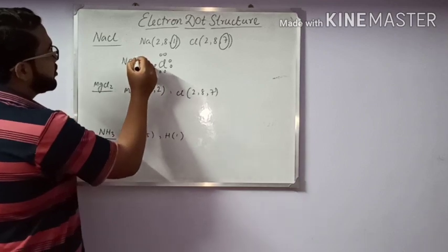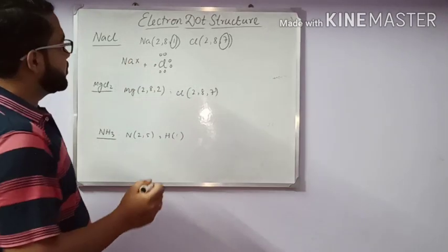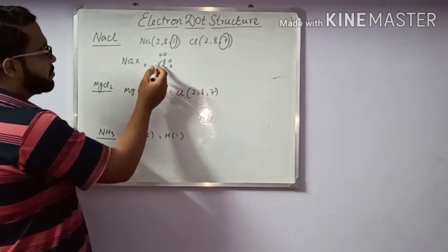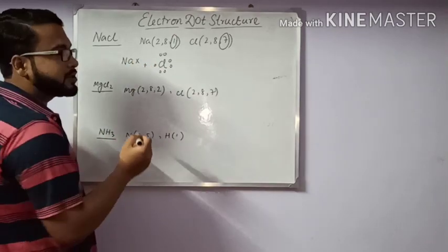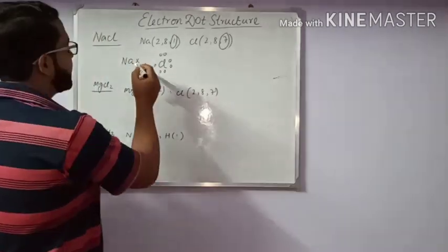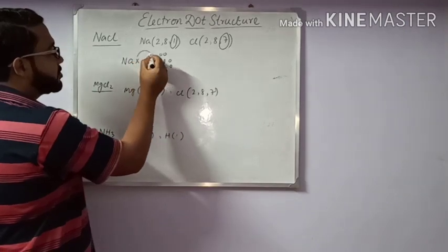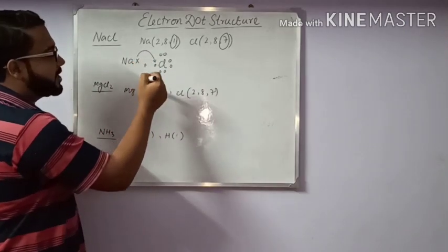So to complete the octet rule, this chlorine atom needs one more electron for its stable configuration. So this electron goes here and this is sharing.